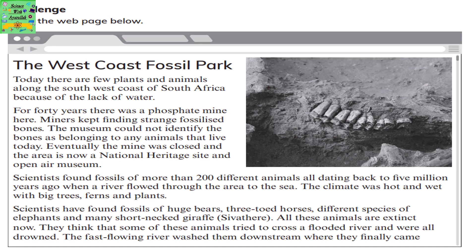Scientists found fossils of more than 200 animals, all dating back to 5 million years ago when a river flowed through the area to the sea. The climate was hot and wet with big trees, ferns and plants. Scientists have found fossils of huge bears, three-toed horses, different species of elephants and many short-necked giraffes. All these animals are now extinct.